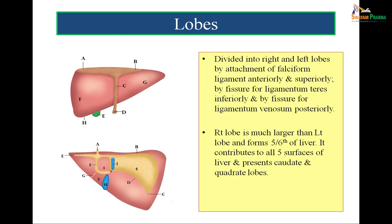The division is by fissure for ligamentum teres inferiorly and by fissure for ligamentum venosum posteriorly. F represents the fissure for ligamentum venosum. I represents the groove for inferior vena cava. A is the falciform ligament and E is the left triangular ligament. C is the right triangular ligament and we also see the superior and inferior layers of the coronary ligament in this figure. Number 1 represents the caudate lobe on the posterior surface of the liver, 2 represents the caudate process, and 3 represents the quadrate lobe of the liver.